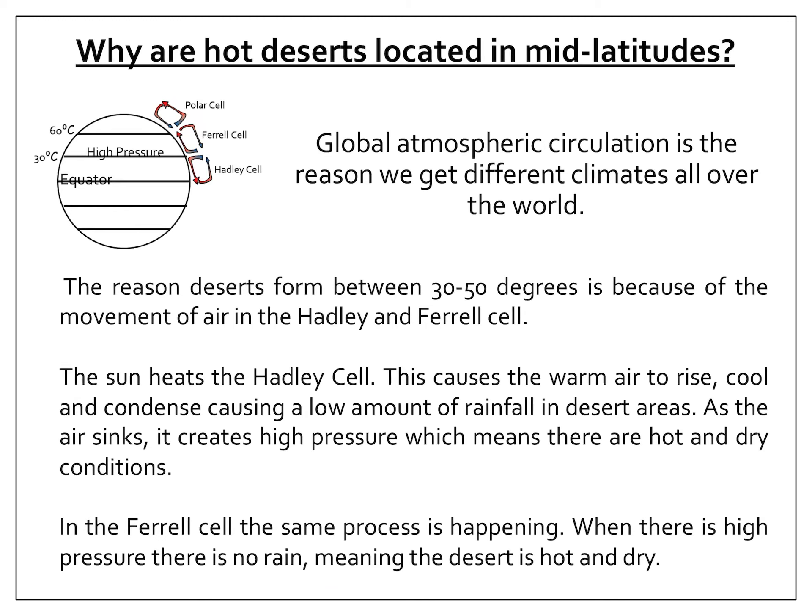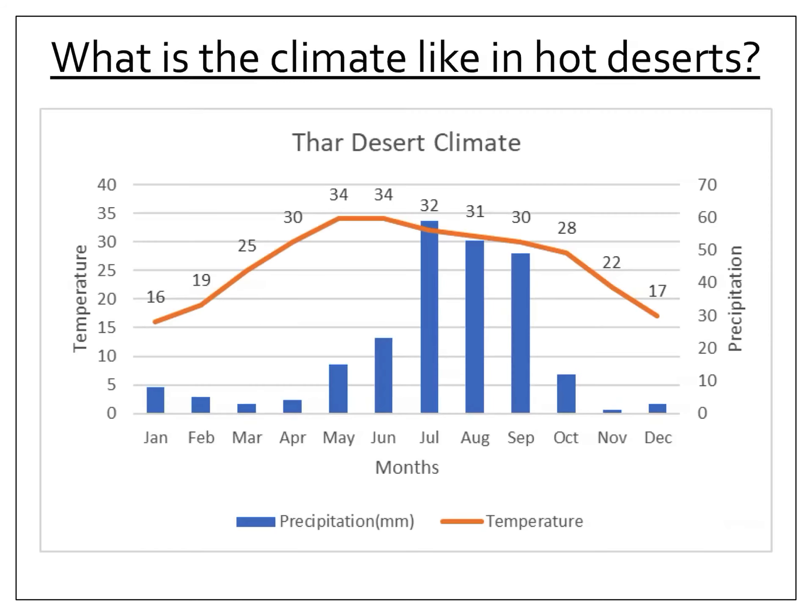In the Ferrel cell, the same process is happening. When there is high pressure, there is no rain, meaning the desert is hot and dry.